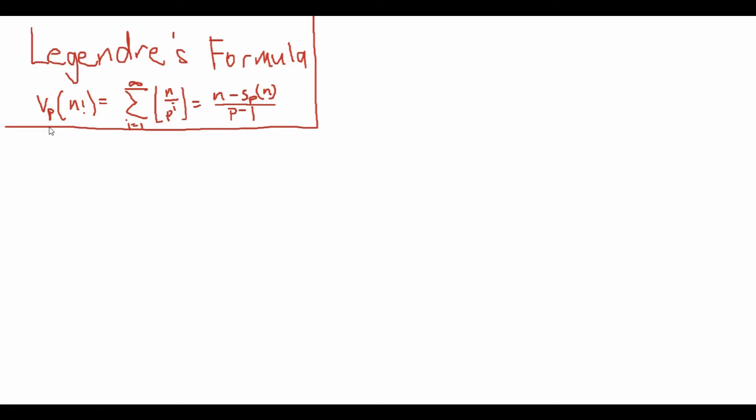And sp of n is if you write n in base p, the sum of the digits of this base p number. So let's first start by proving the first equation: vp of n factorial is equal to that sum.